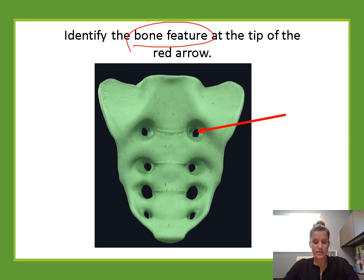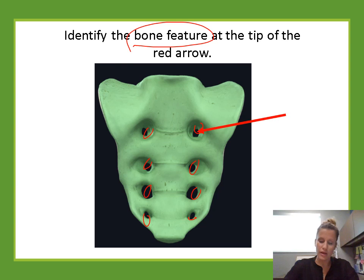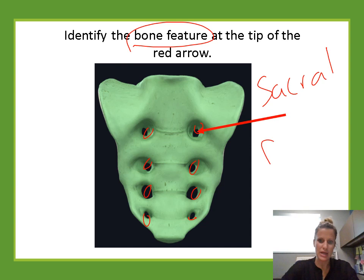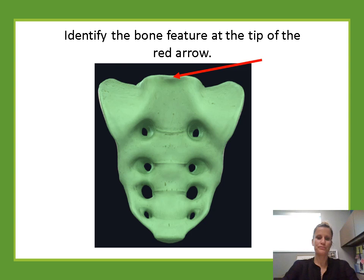Identify the bone feature. Pay attention — the last question just wanted you to say sacrum, but this asks for a specific feature. These little holes in the sacrum are where the sacral nerves pass through into the pelvis. A hole is a foramen, so this is a sacral foramen. There are numerous of them.